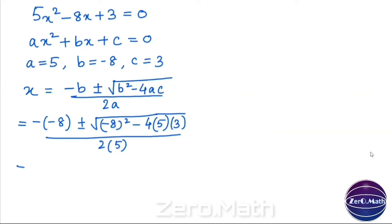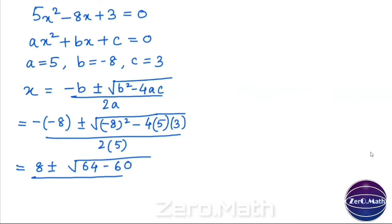So we are having: negative of negative 8 becomes positive 8, plus or minus root over 64. Doing the multiplication, 4 into 5 is 20, and 20 into 3 is 60, divided by 10. So we are having 8 plus or minus root over 4, divided by 10.